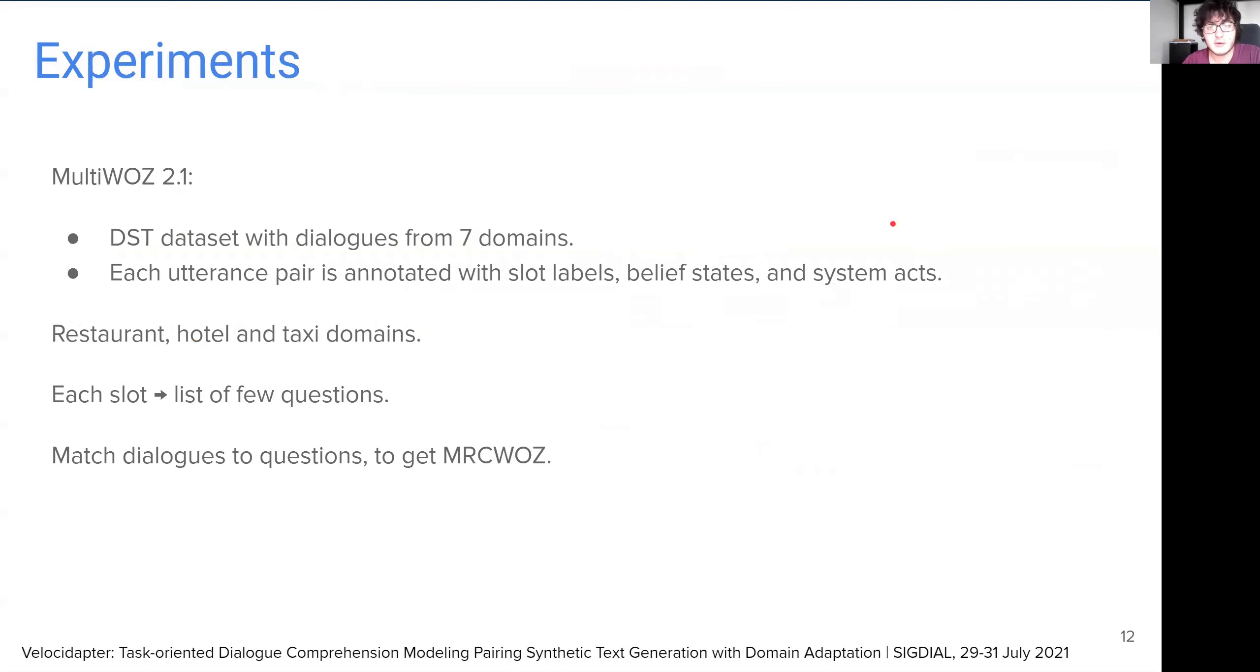In order to evaluate our framework, we create a new dataset from an existing one, MultiWOZ 2.1. MultiWOZ is a dialogue state-tracking dataset which spans over seven domains, where each utterance pair in dialogues are annotated with slot labels, belief states, and system acts. From this dataset, we choose restaurant, hotel, and taxi domains, because our observations show that their pools of slot labels show very few overlaps, thus resulting in a diverse dataset.